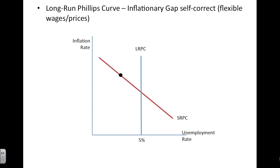To self-correct an inflationary gap, we have to imagine that people's inflationary expectations are higher. So people begin to expect the inflation — they now want higher wages, and the price of many input costs come up. Businesses can no longer produce where they once did or overperform. So whereas we see the SRAS shift to the left, in this case we see the SRPC shift to the right.